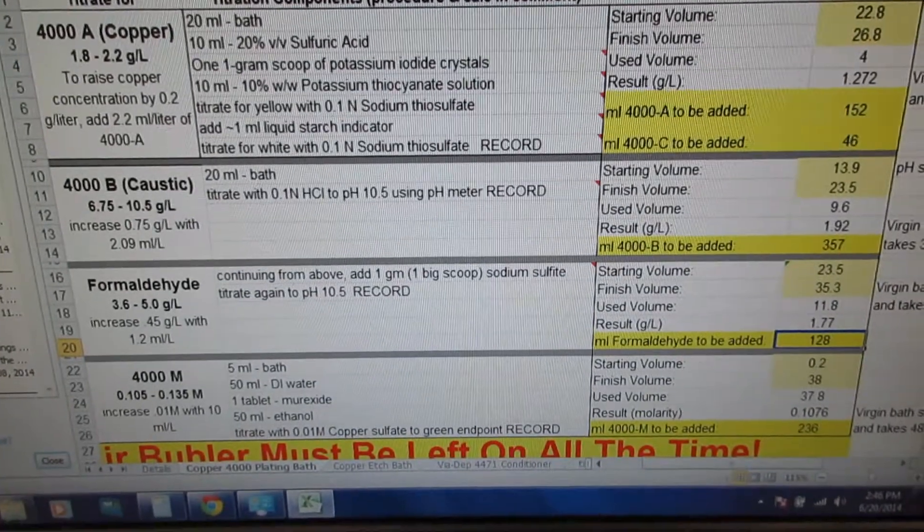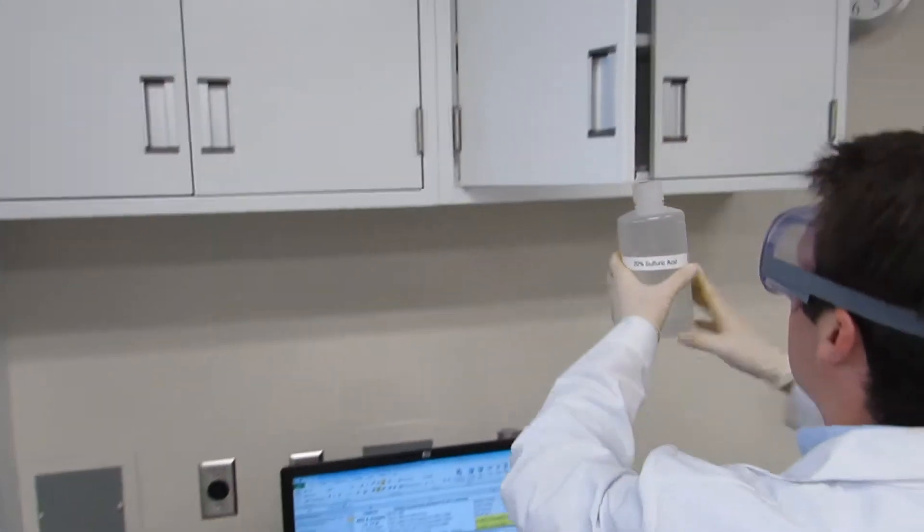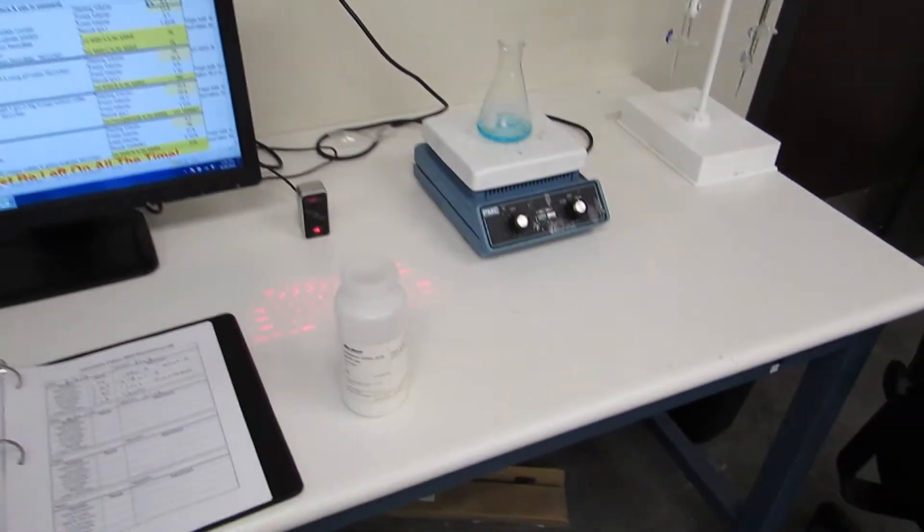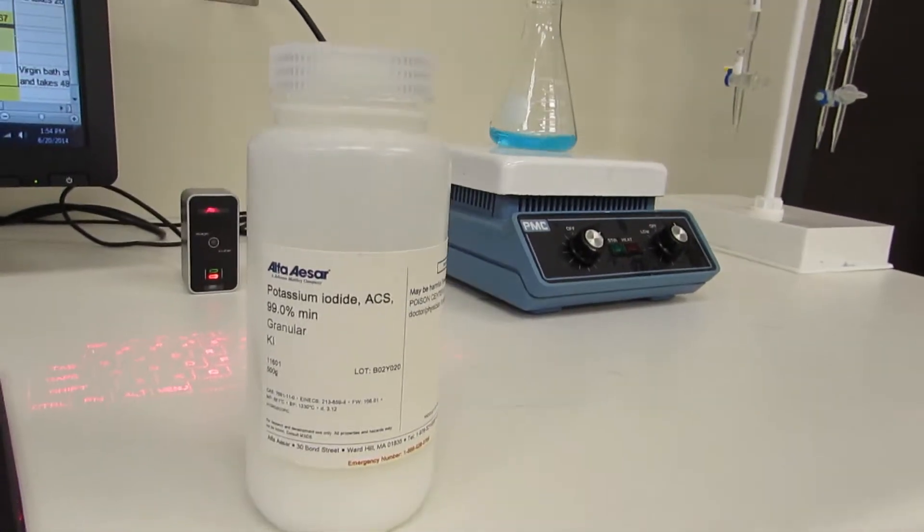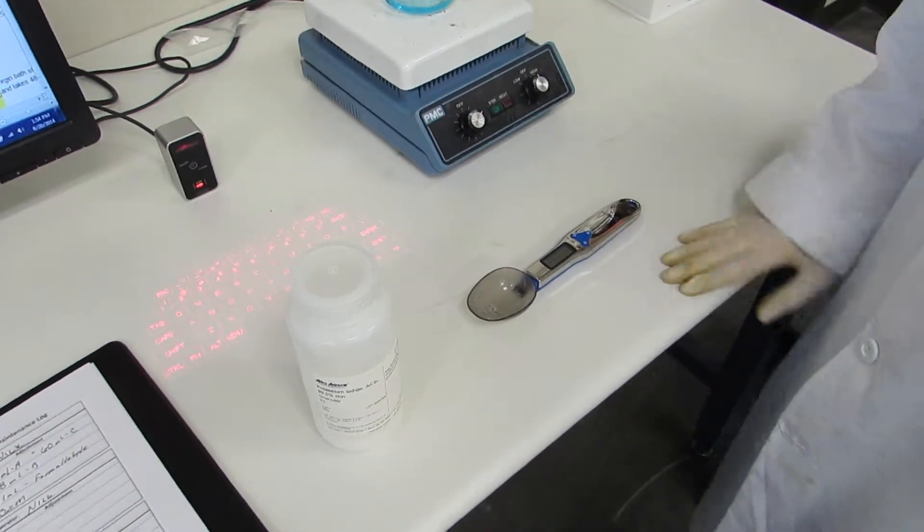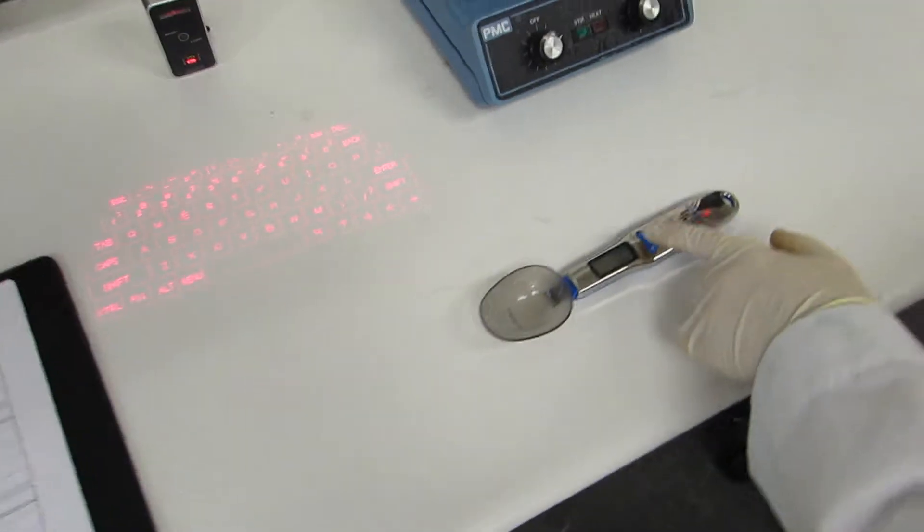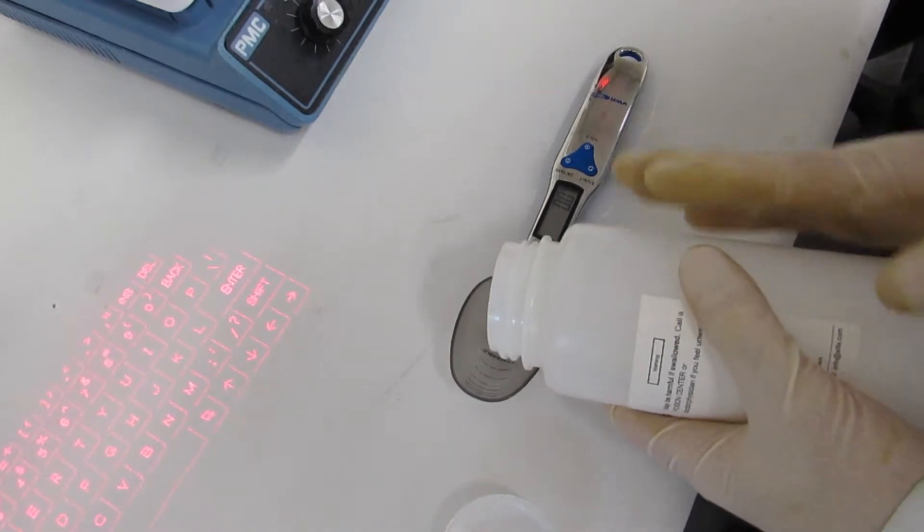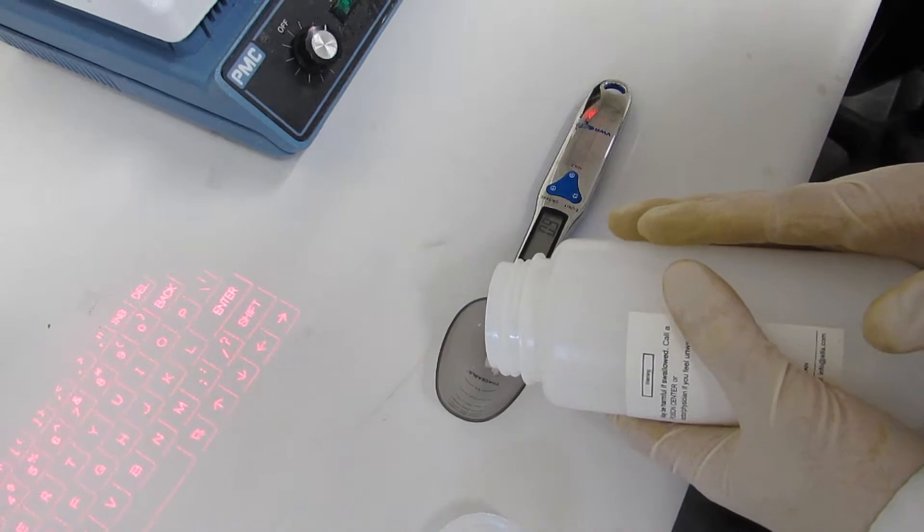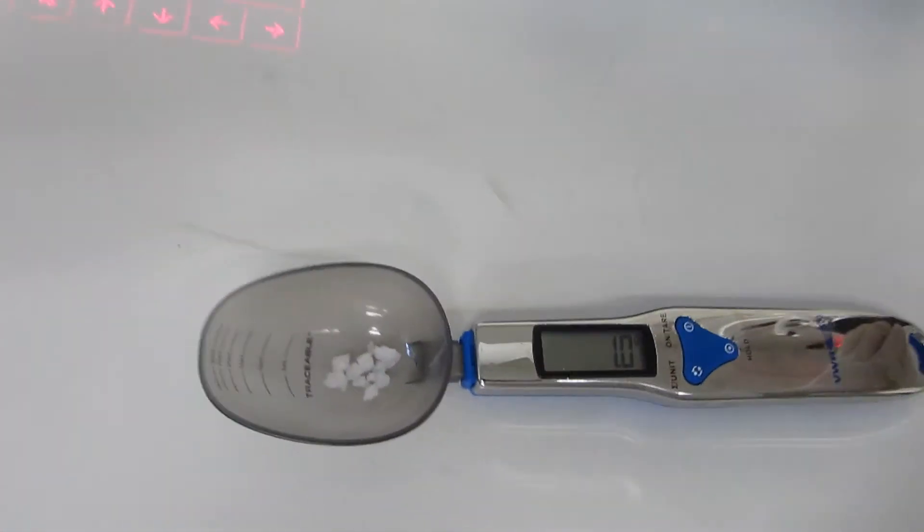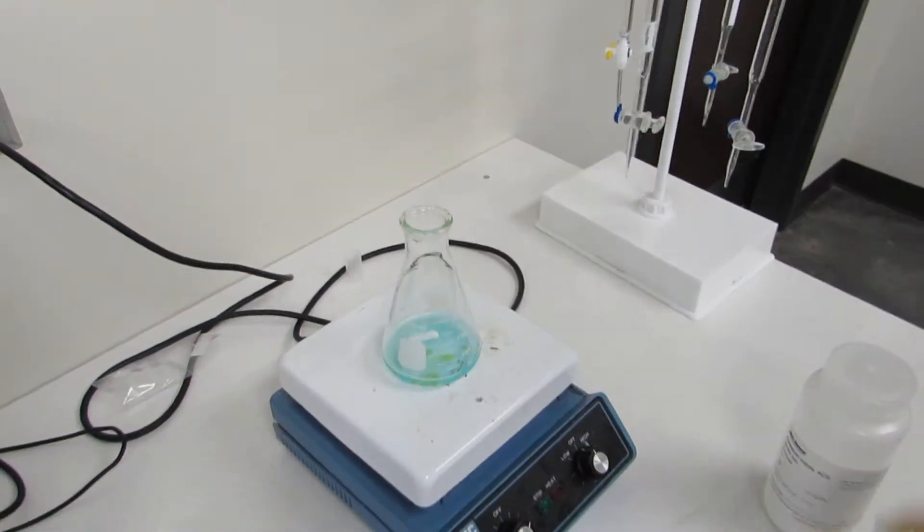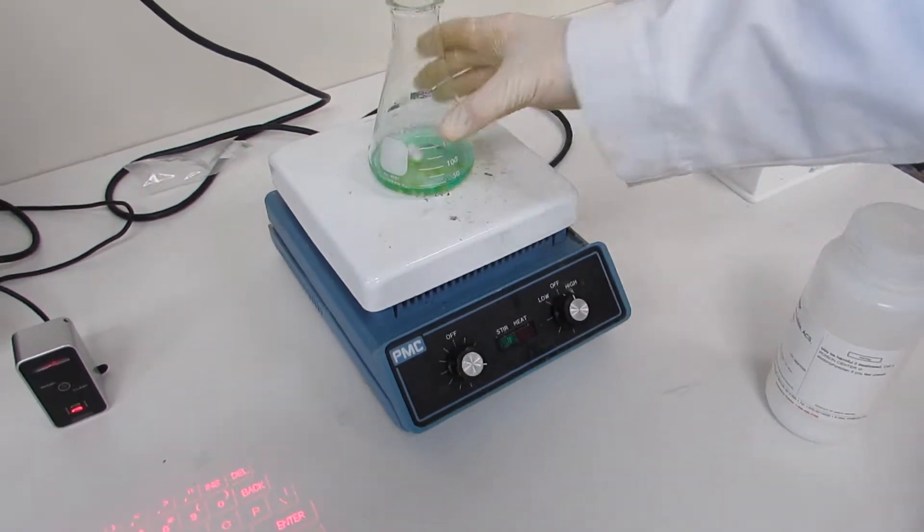The next step is one gram scoop of potassium iodide crystals. We'll use this measuring scoop, which you have to turn on and set zero to zero. Then you carefully pour the crystals perfectly to one gram. Then you just add it to your mix and it will start to dissolve. You can speed up the stirrer to speed up the process of dissolving.